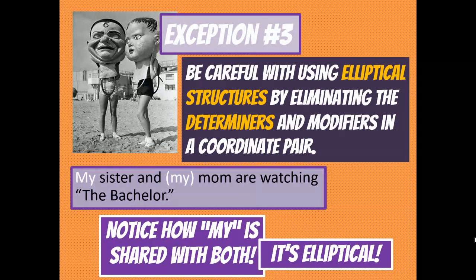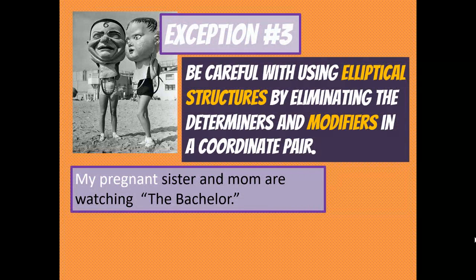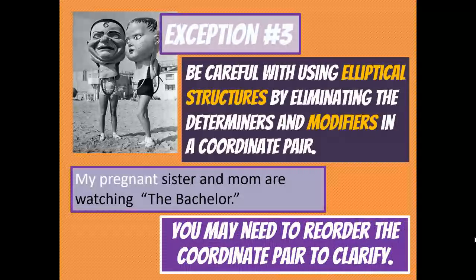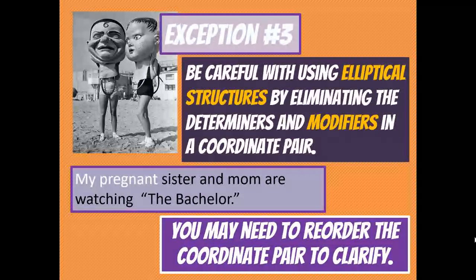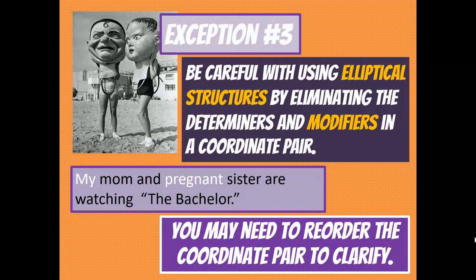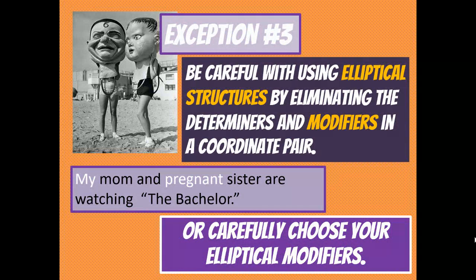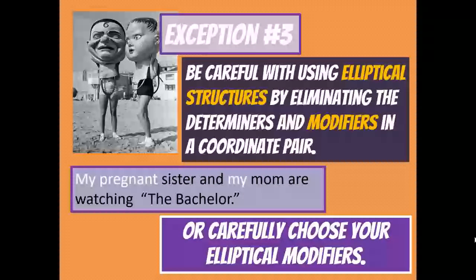If I said 'my pregnant sister and mom are watching The Bachelor,' it gets tricky. We have to be careful with modifiers. 'My' goes with both, but is it 'my pregnant sister and my pregnant mom,' or 'my pregnant sister and my mom'? Reordering provides clarity: 'my mom and pregnant sister' — 'my' is shared with both, but 'pregnant' only goes with sister. Or simply say 'my pregnant sister and my mom are watching The Bachelor,' being careful that 'pregnant' only goes with sister.